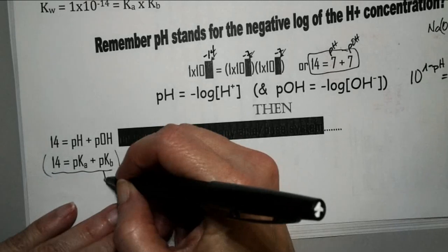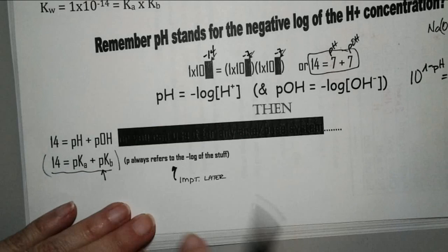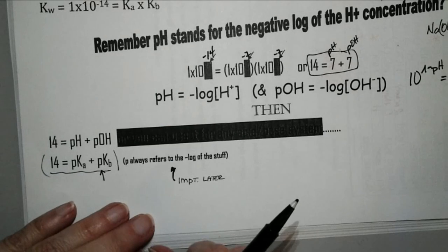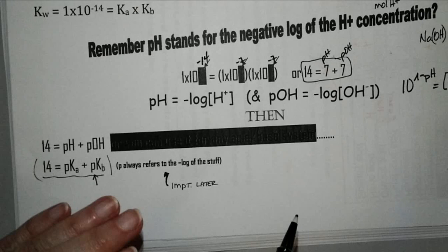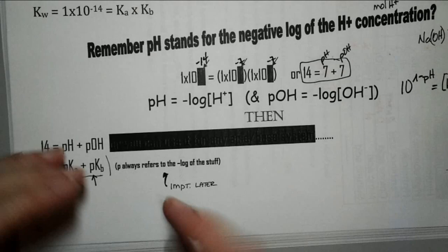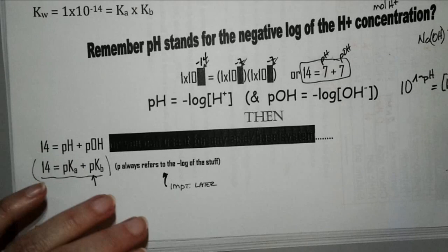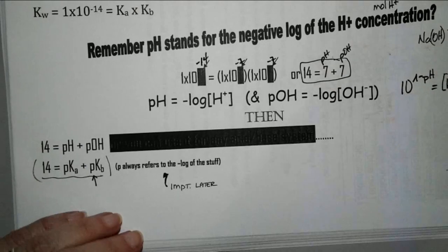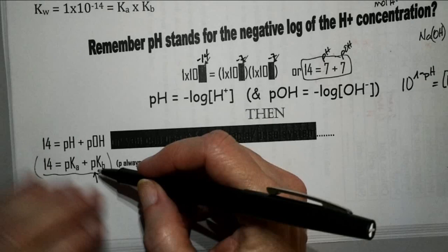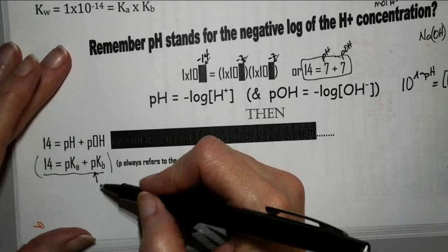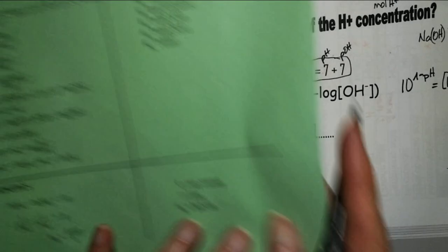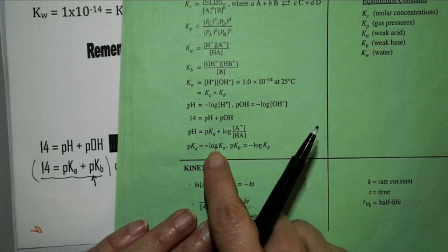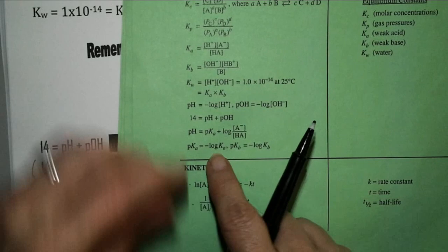You need to remember that when you have that little lowercase p, it always means you're going to take the negative log — like pH, that lowercase p with a capital H means take the negative log. So when you see pKa, it says right here it's the negative log of Ka. That little p in front means take the negative log of that stuff.